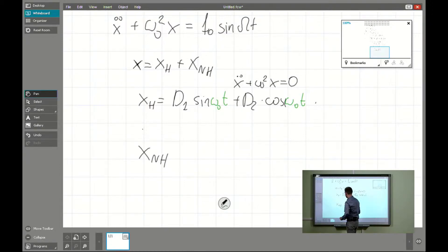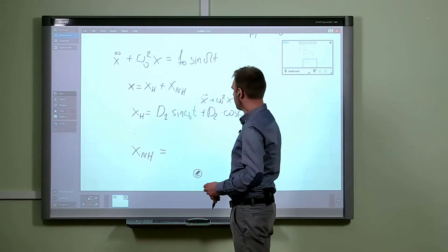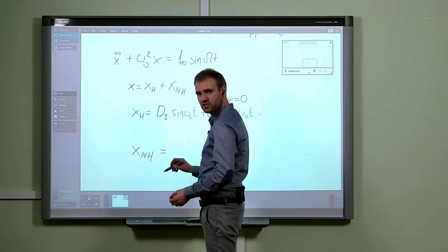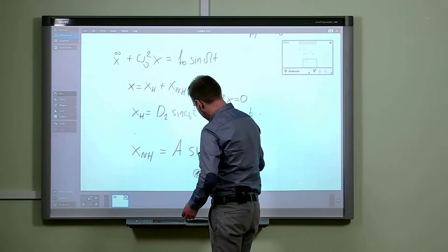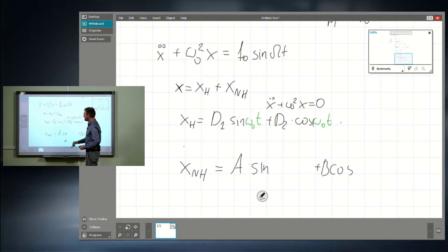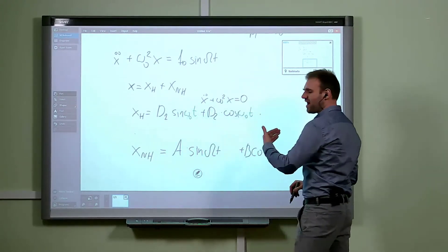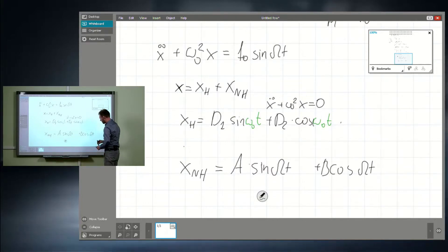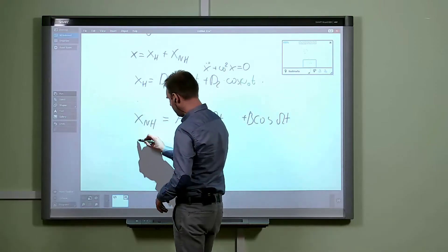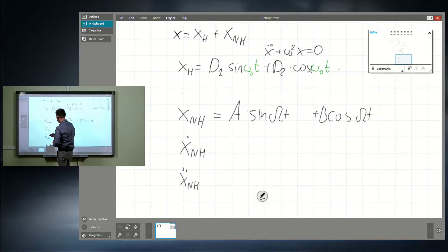For the particular solution of the non-homogeneous part, we use the method of prediction. We know that if the right-hand side has the form of a trigonometric or harmonic function, the particular solution must be predicted as a linear combination of sine and cosine with exactly the same frequency as the right-hand side. It will be some unknown a times sine omega t plus unknown b times cosine omega t.